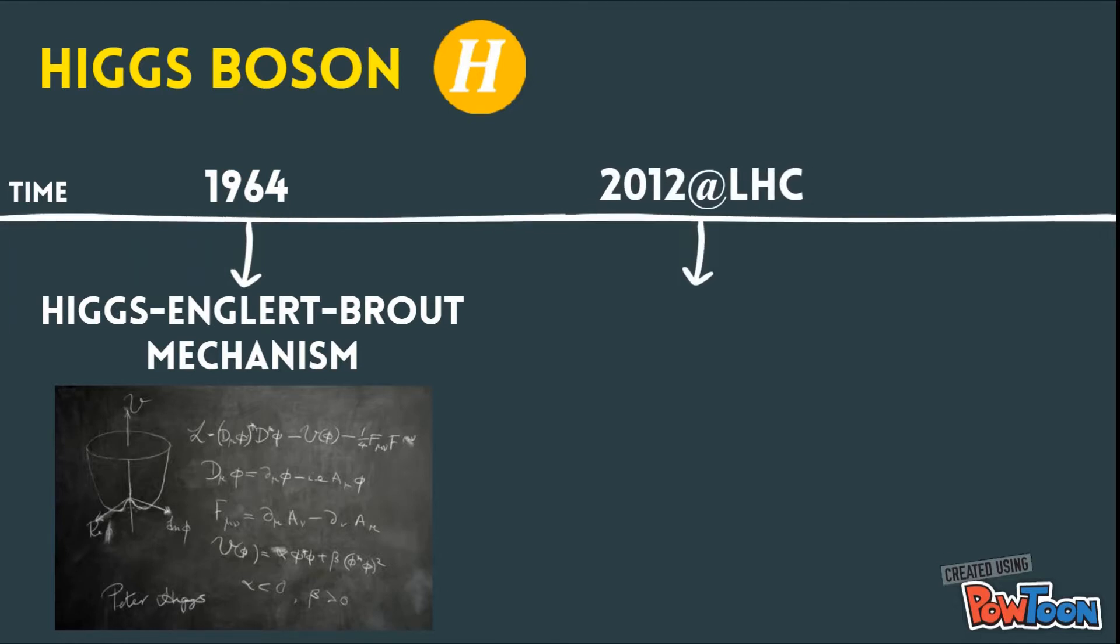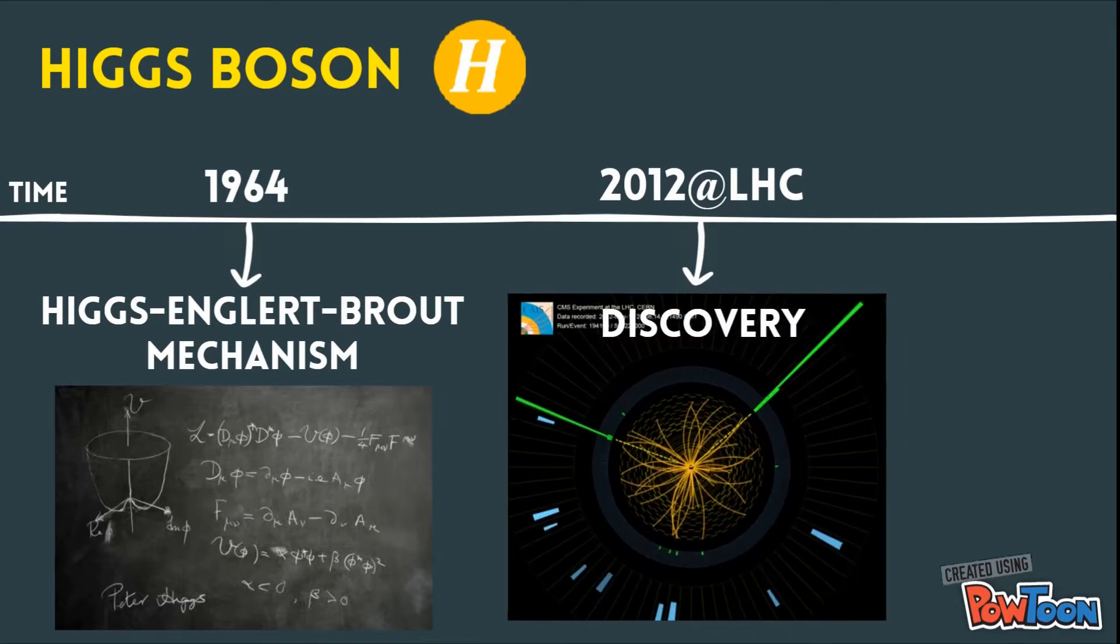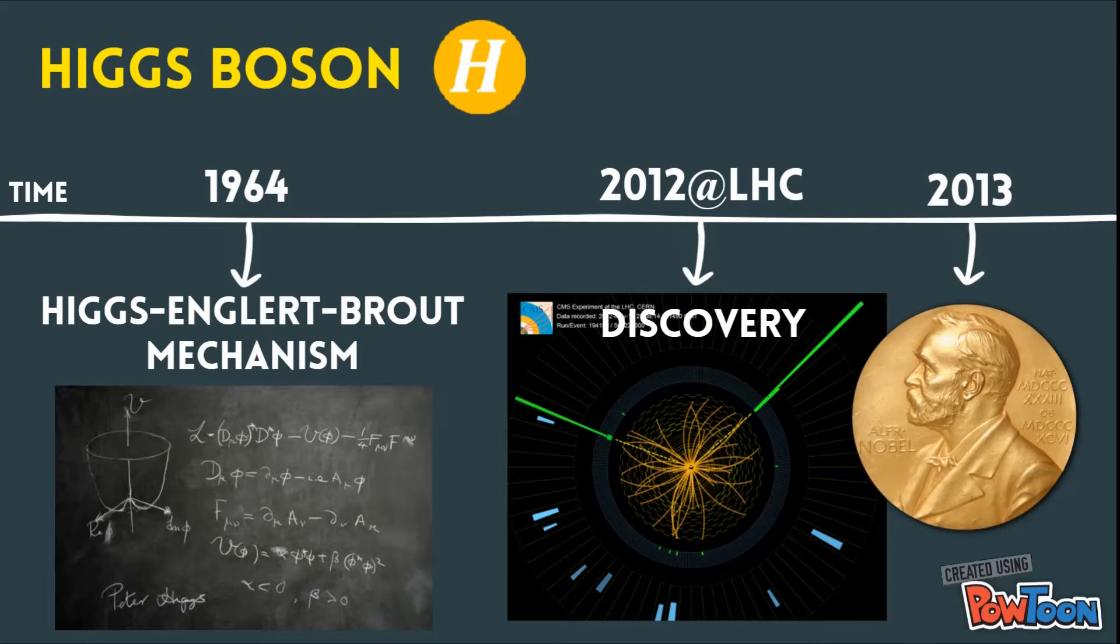In 2012 at the LHC, the Higgs boson was finally discovered and the importance of the underlying mechanism was recognized with the Nobel Prize in Physics in 2013. The Higgs boson is considered to be the final piece of the standard model.